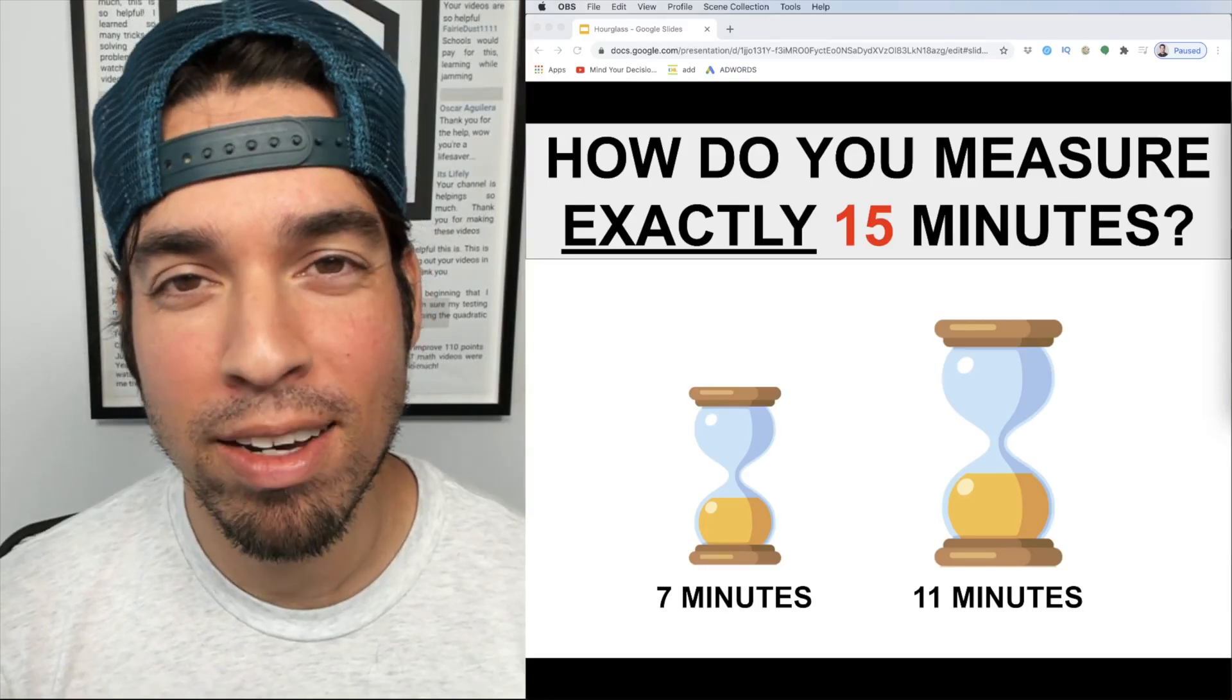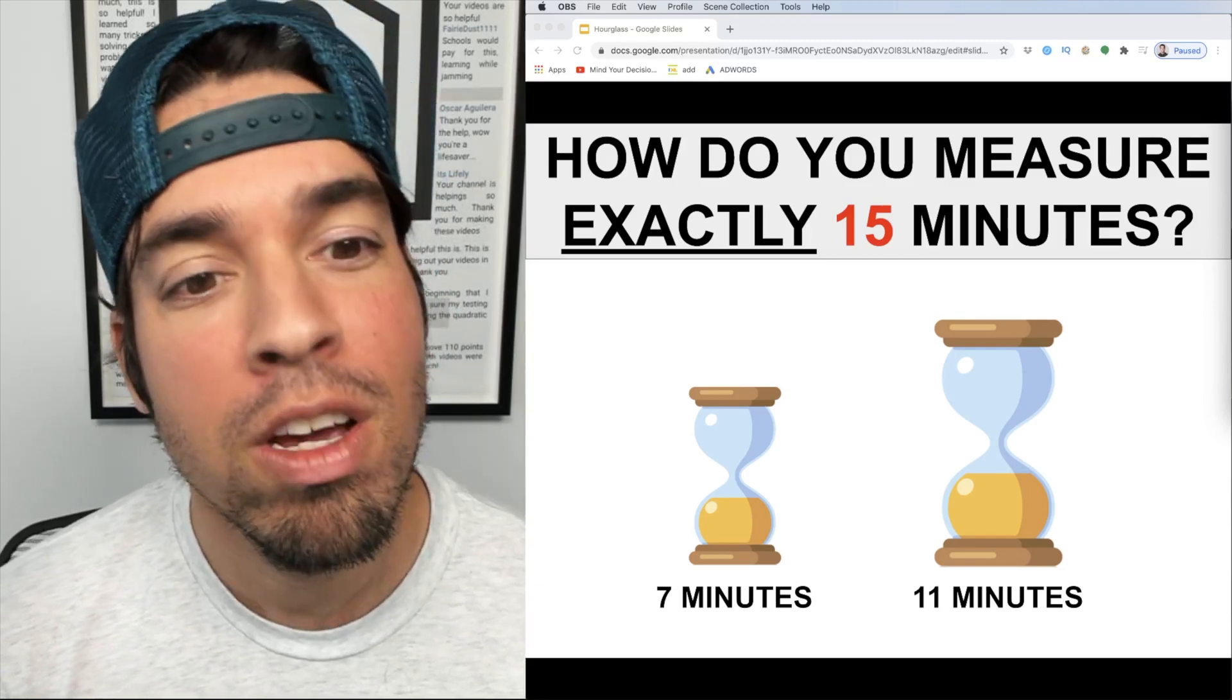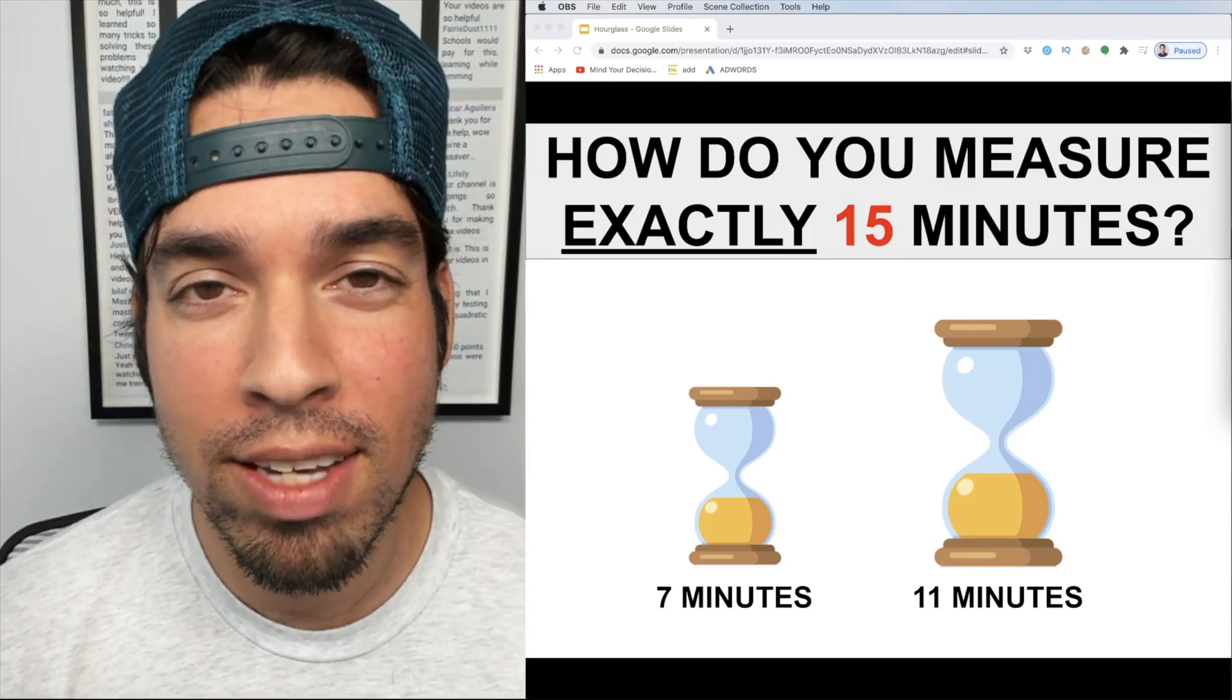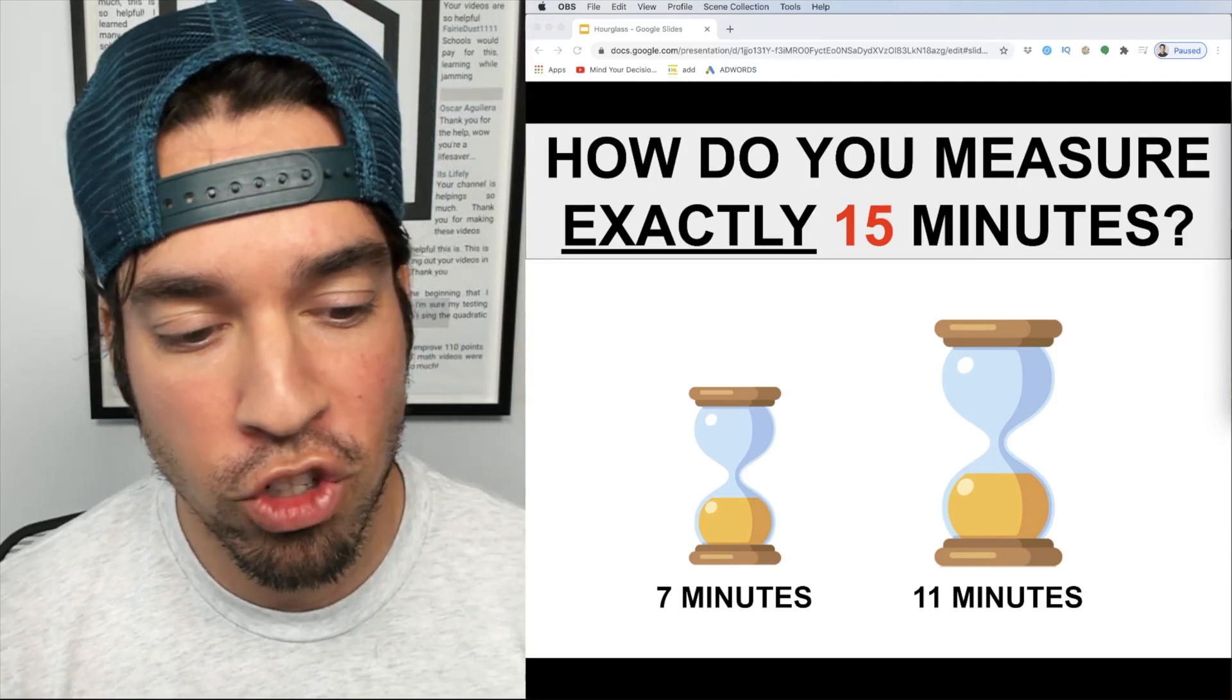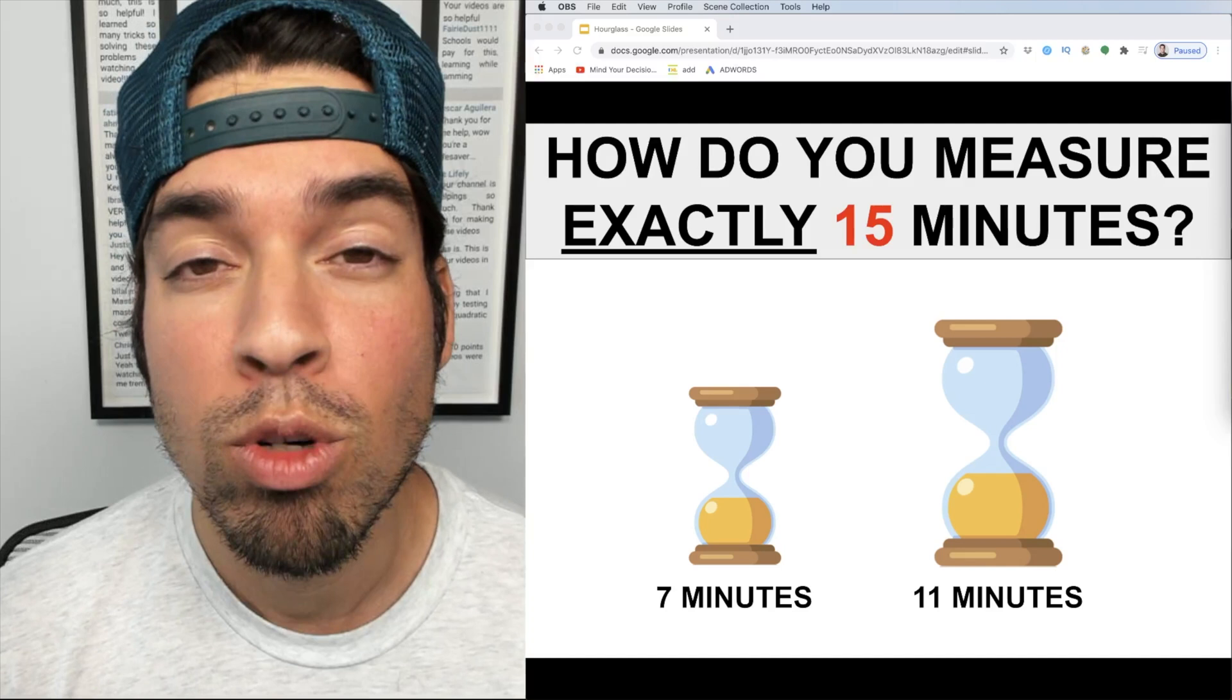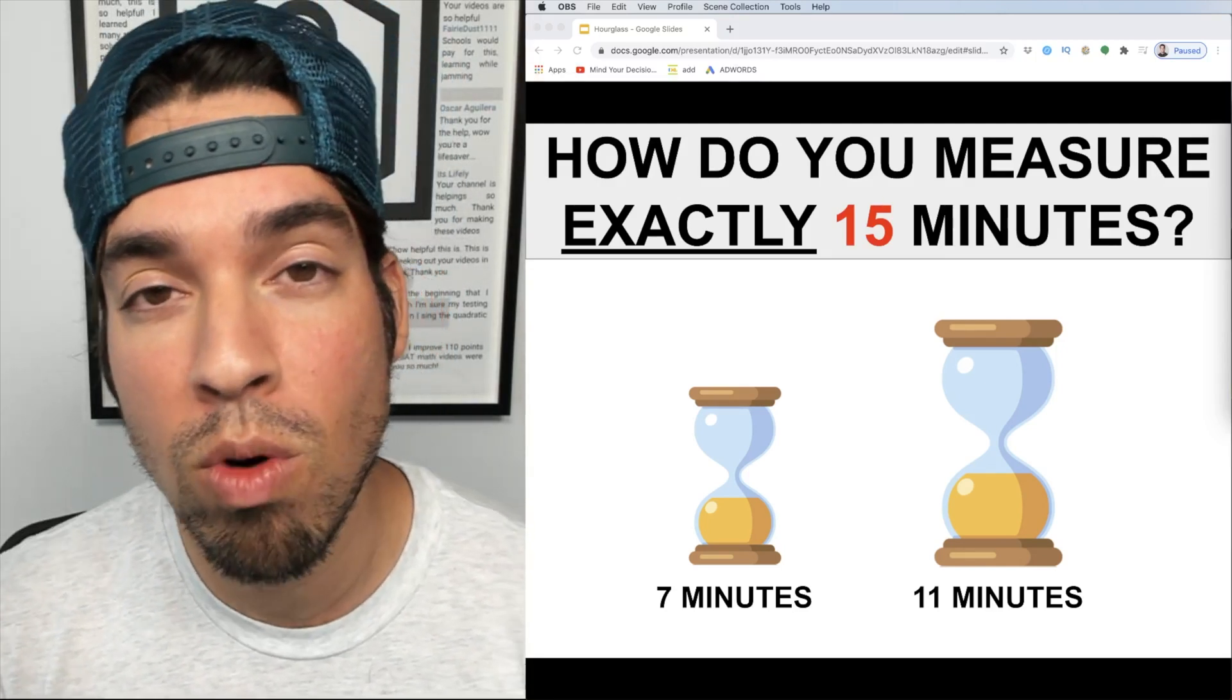What's up everybody and welcome back to another math puzzle. In this one we are asked the question of how do you measure exactly 15 minutes when you just have two timers, one that measures seven minutes and one that measures 11 minutes. Remember we're talking about getting exactly 15 minutes, so we don't want to estimate quantities and say well maybe about half of this timer and about half of that timer is gonna get me roughly to 15 minutes. I want to know how we can get exactly 15 minutes.